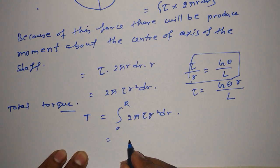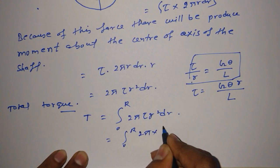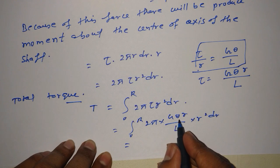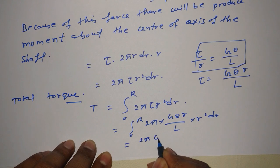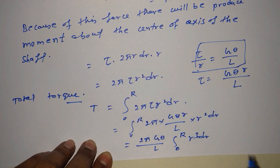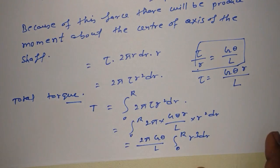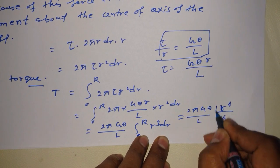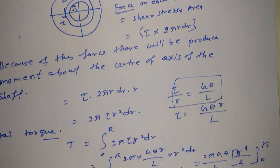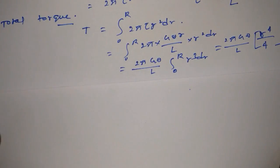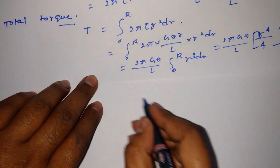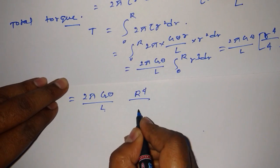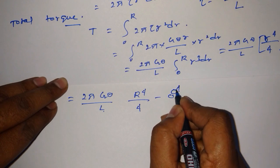Substituting, we get T equals the integral from 0 to R of 2·pi·(G·theta·r/L)·r²·dr. Taking all constants outside: T equals 2·pi·G·theta/L times the integral from 0 to R of r³·dr. After integration: T equals 2·pi·G·theta/L times r⁴/4 evaluated from 0 to R, which gives T equals 2·pi·G·theta/L times R⁴/4.